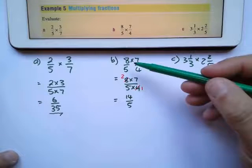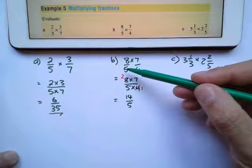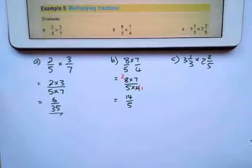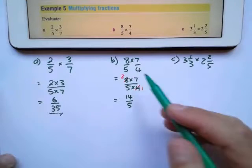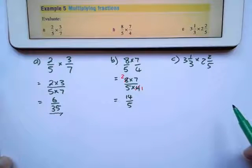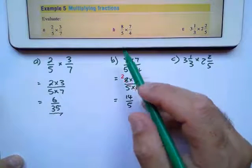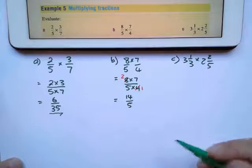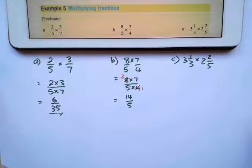Because they give this 8 over 5 as an improper fraction, I'm going to leave my answer as an improper fraction unless the question says leave your answer as a mixed number. But because they gave us an improper fraction at the start, we can leave our answer in improper fraction form.